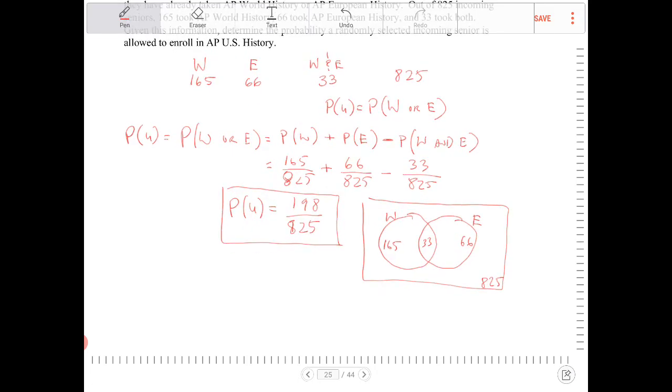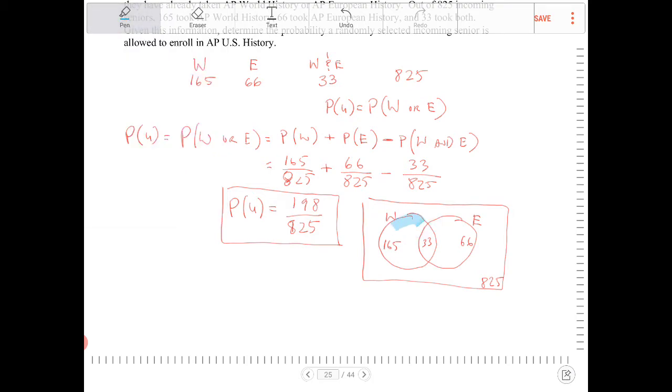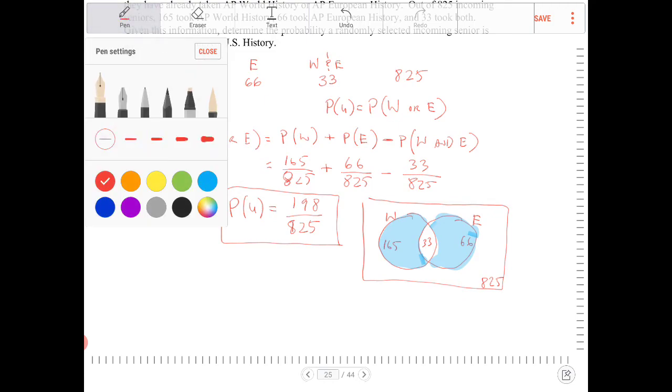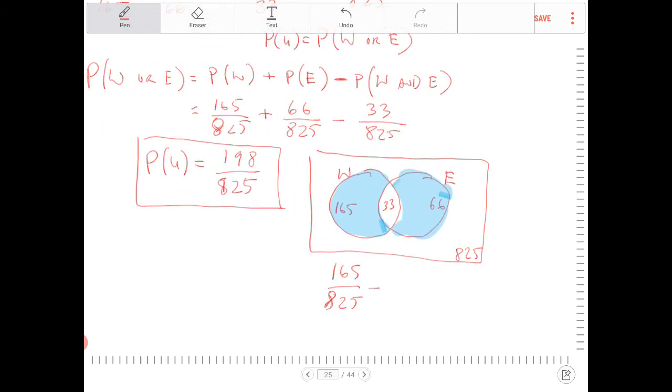We're looking for the probability of W or E, right? So we need all of this area, and add it with all of this area, right? So how are we going to do that? So again, the visual way of thinking about this is 165 over 825, plus 66 over 825.